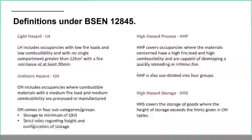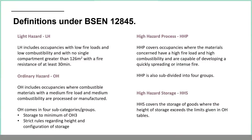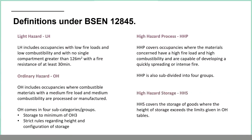Under BSEN 12845, there are definitions for light hazard, ordinary hazard, and high hazard. High hazard is split into two types: high hazard process and high hazard storage. High hazard process is about what you're doing — welding, hot works, machines running hot — whereas high hazard storage is about storing goods closely together in racks or bays. In some cases you have a bit of both.